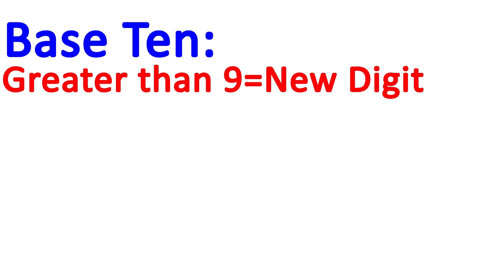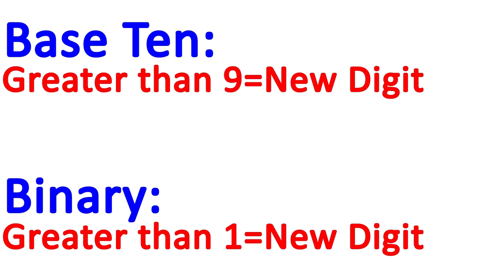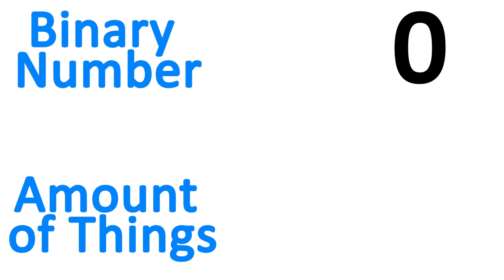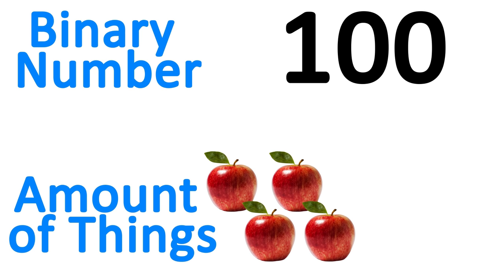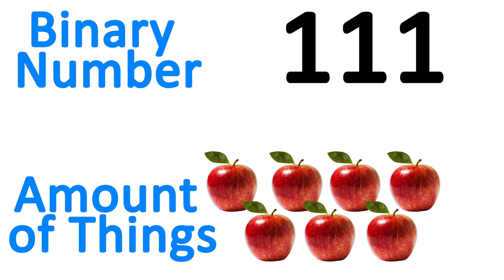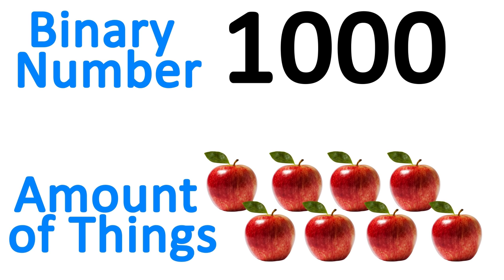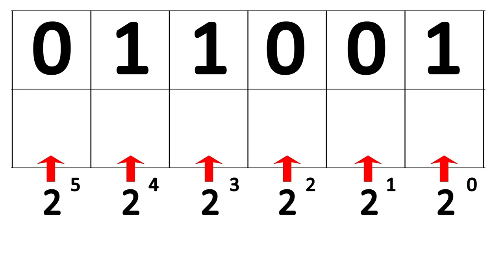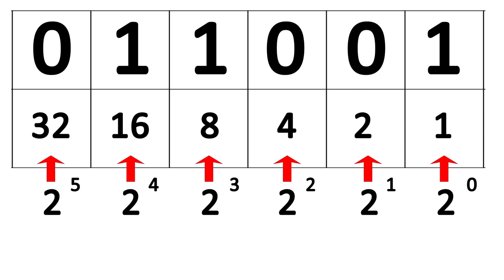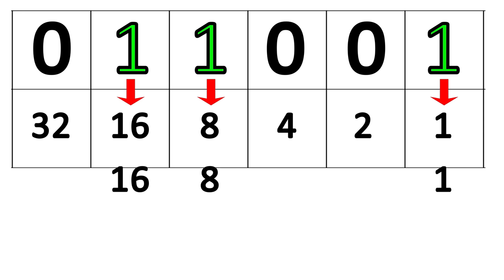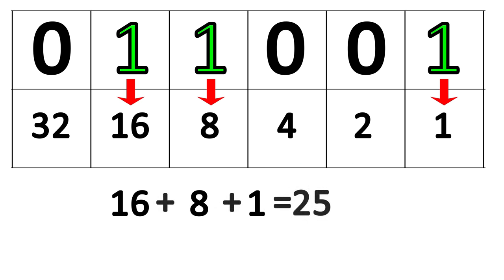Binary works the exact same way as base 10 positional, but instead of each digit going from 0 to 9, it goes from 0 to 1. Counting upwards in binary sounds like this: 0, 1, 10, 11, 100, 101, 110, 111, and 1000. Because each digit of binary has only 2 values and not 10, each additional digit represents an increasing power of 2 rather than a power of 10 — so this is the number of ones, the number of 2s, 4s, 8s, 16s, 32s, 64s, 128s, and so on. Not nearly as efficient as base 10, but exponentially more efficient than tally marks.